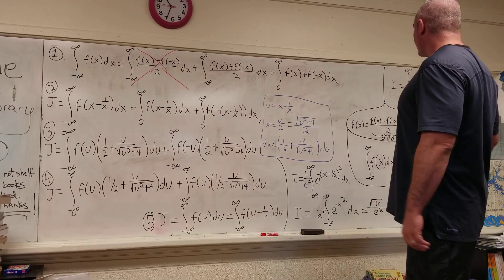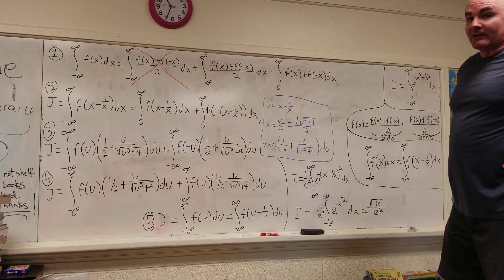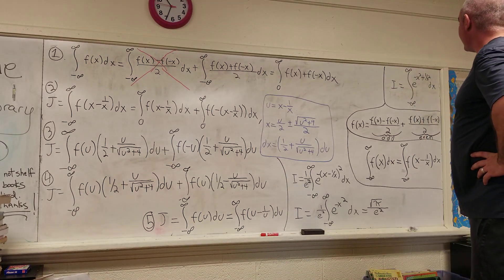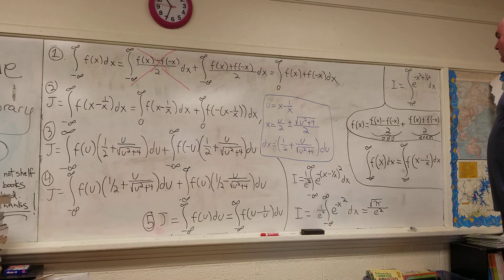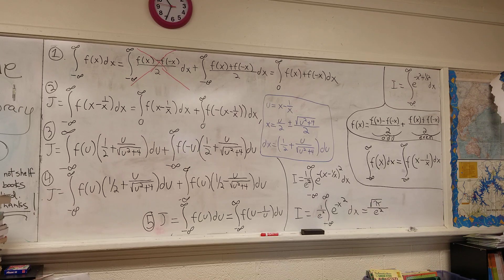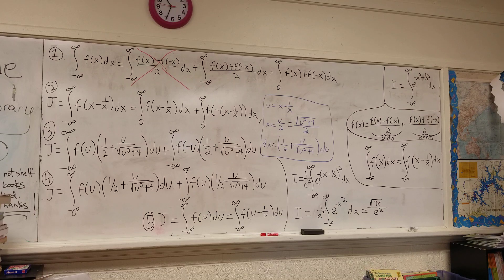Hi everybody, welcome back to another video on Feynman integration. I'm not going to be doing Feynman integration today — I thought this result was too cool to pass up. We are going to be solving a very difficult integral: the integral from negative infinity to infinity of e to the negative x squared minus 1 over x squared dx.